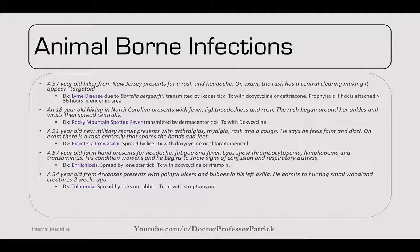A 21-year-old new military recruit presents with arthralgias, myalgia, a rash, and a cough. He feels faint and dizzy. On exam, there's a rash centrally that spares the hands and feet. This would be Rickettsia prowazekii, spread by lice. It's common in high-density settings like military barracks or refugee camps. Treat with doxycycline or chloramphenicol.